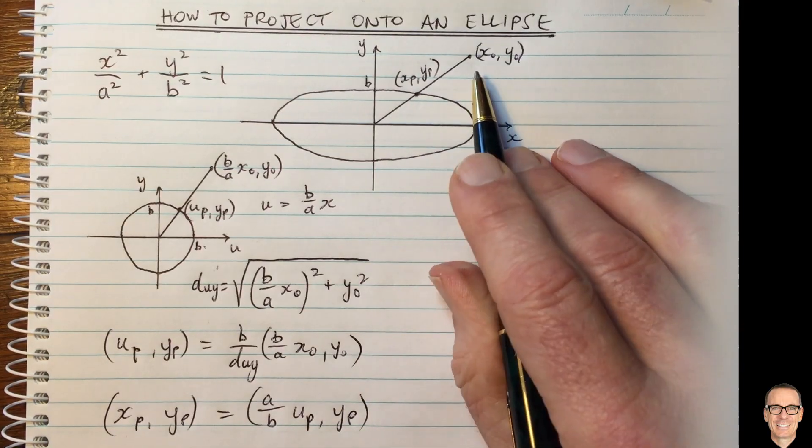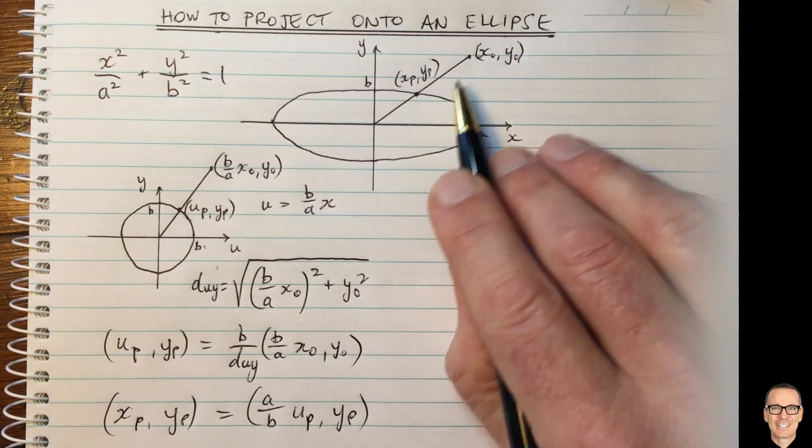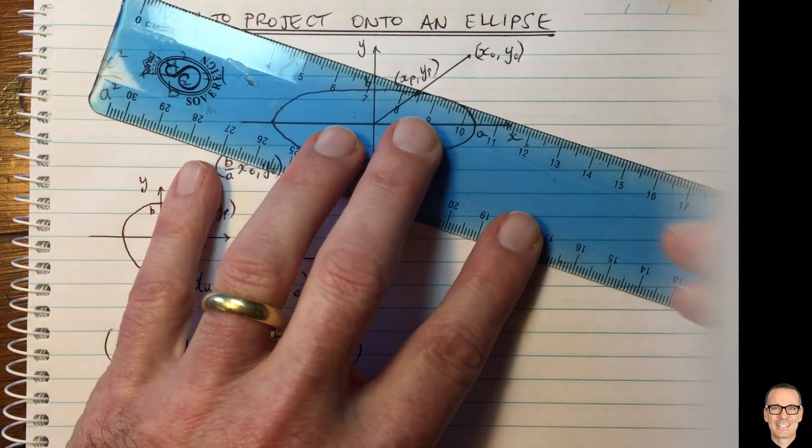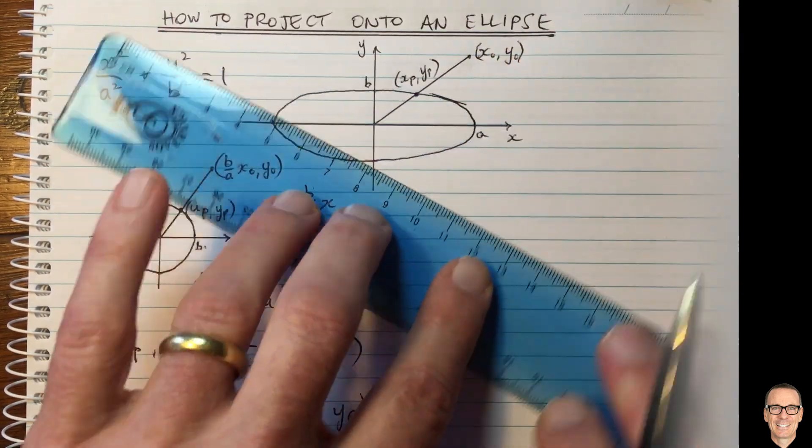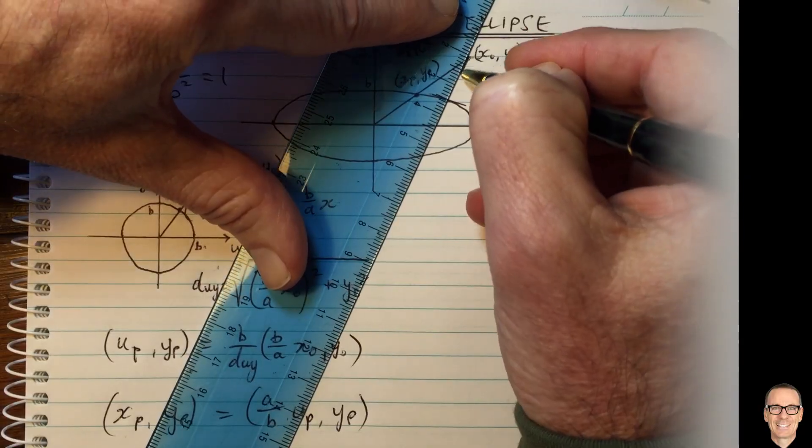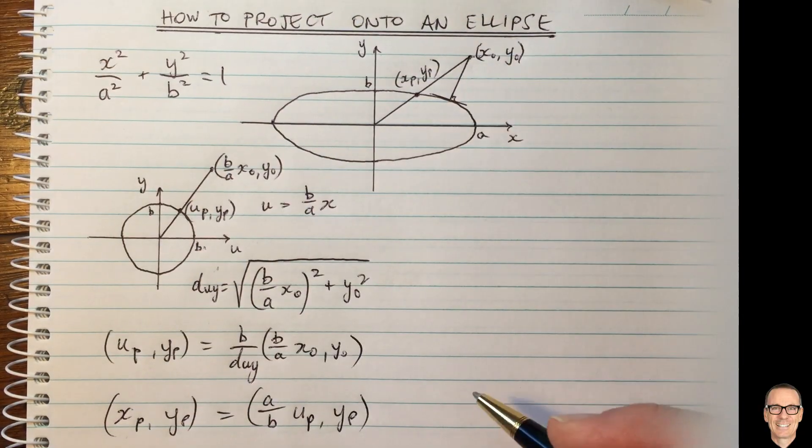Another thing that we might want to do is to find the closest point on the ellipse to our point here. So that means we need to find the point where the tangent is at 90 degrees to the projection line. Okay, so what can we do there? How do we find that point?